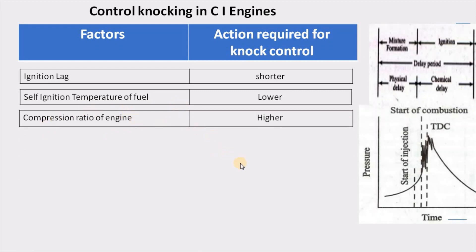The third parameter is the compression ratio. Higher compression ratio means higher temperature and pressure inside the chamber, which increases turbulence, speeds up mixture formation and chemical activity, and shortens the delay period. A shorter delay period means a lower probability of knocking. This is why CI engines generally prefer higher compression ratios of 16:1 to 22:1, compared to 6:1 to 12:1 in SI engines — higher compression ratio means lesser probability of knocking.